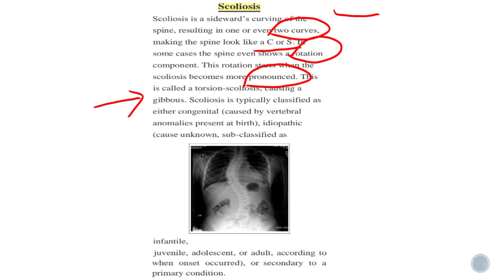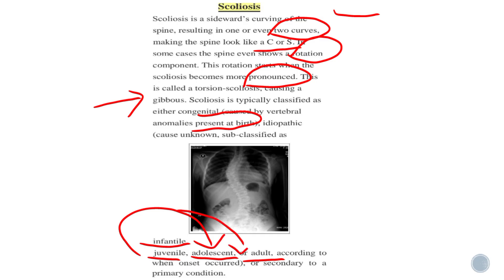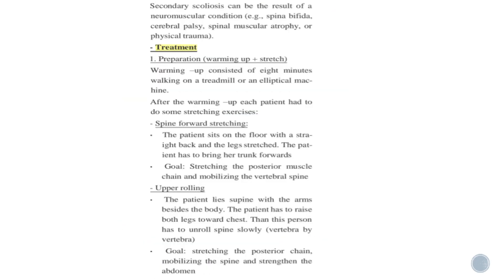Scoliosis is typically classified as congenital, caused by anomalies present at birth, or idiopathic, meaning unknown cause. Idiopathic scoliosis is sub-classified as infantile, juvenile, adolescent, or adult scoliosis according to when onset occurs. It can also be secondary to a primary condition. Secondary scoliosis can result from neuromuscular conditions like spina bifida, cerebral palsy, spinal muscular atrophy, or physical trauma.